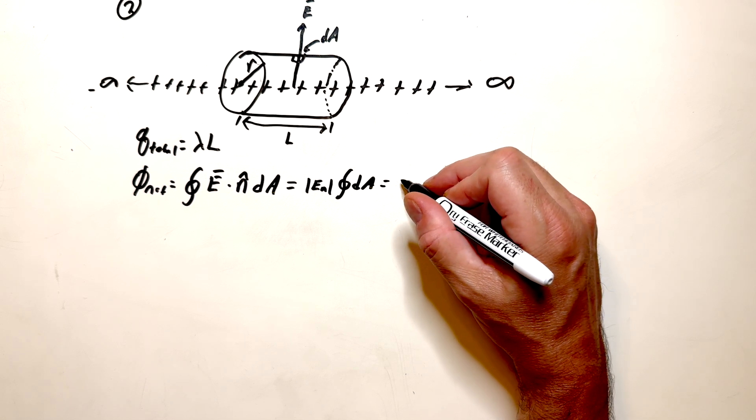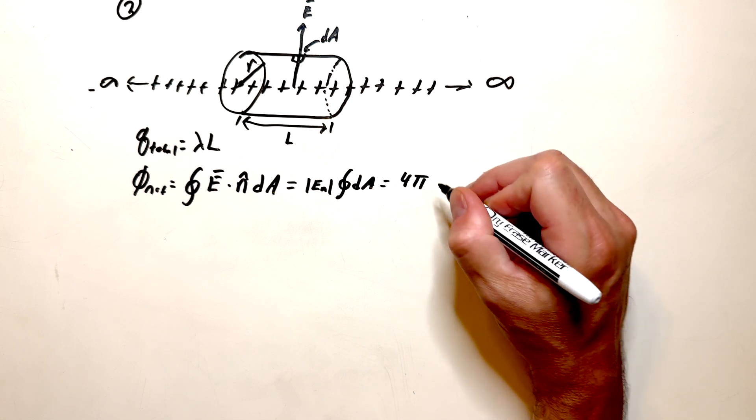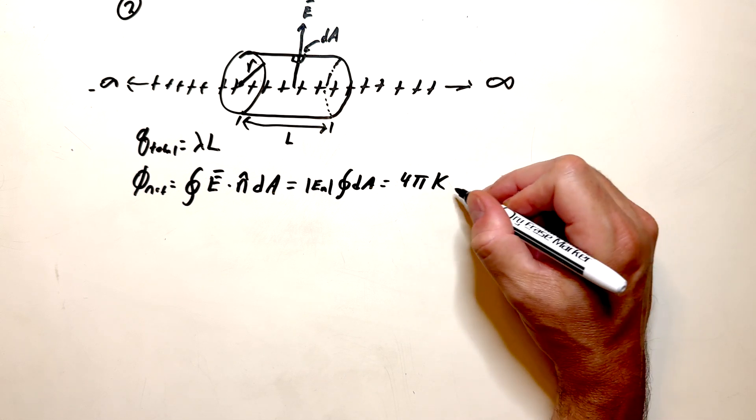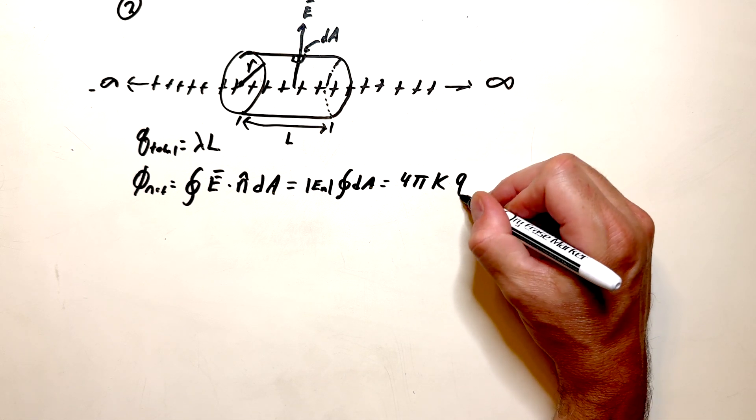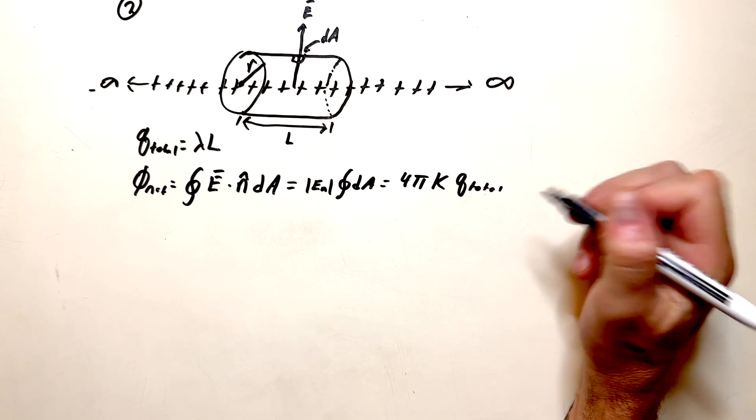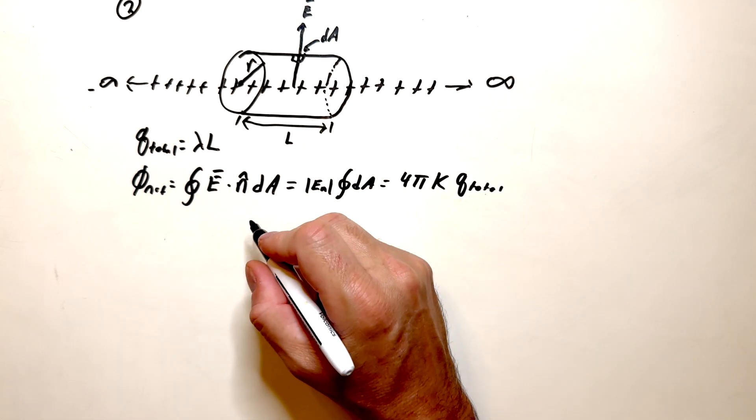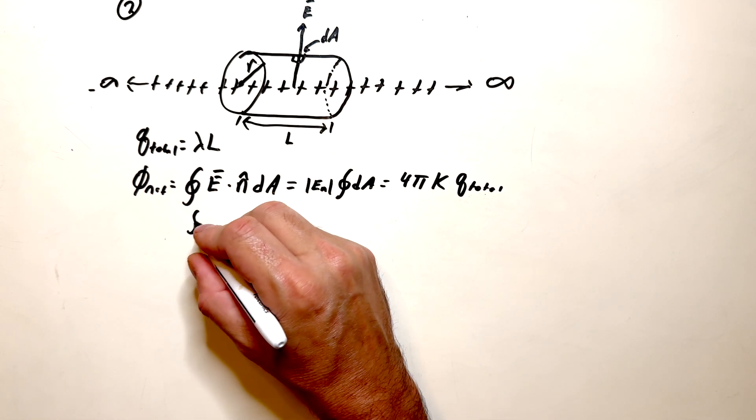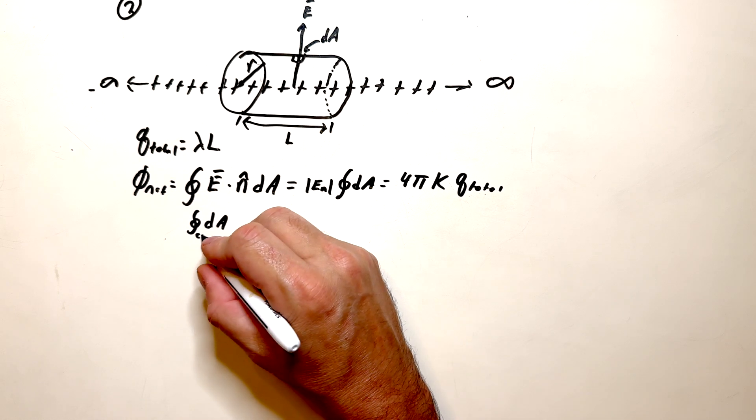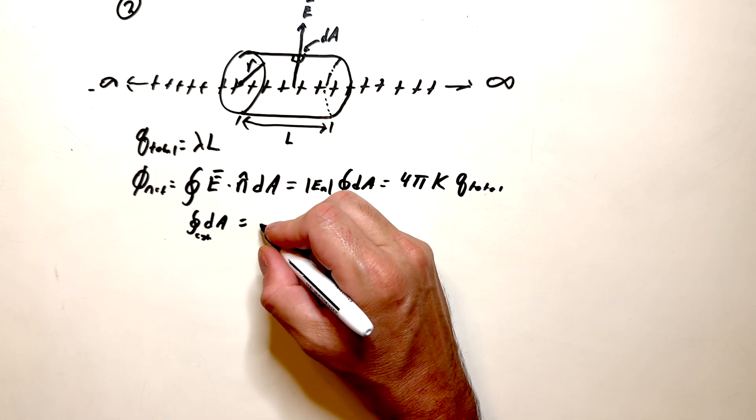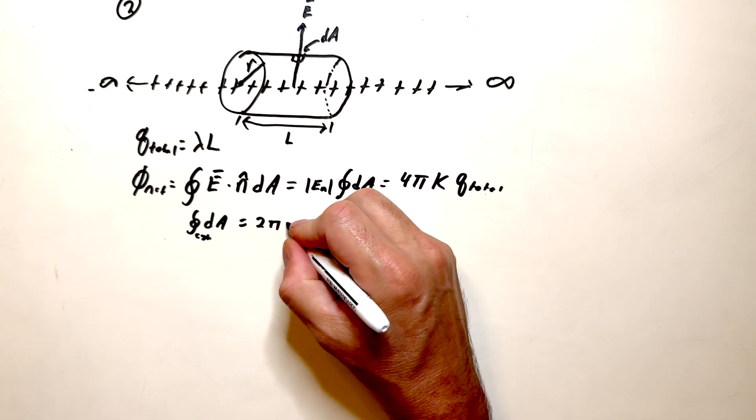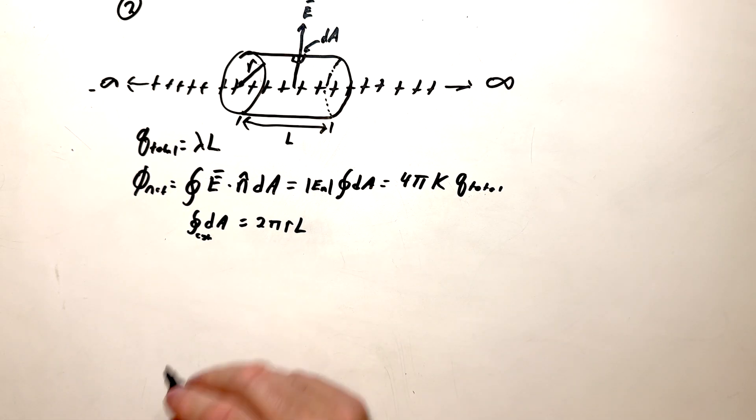And then, through Gauss's law, this will be equal to 4 pi times the Coulomb constant K times Q total. Note that the integral dA for a cylinder is equal to 2 pi r L. That was the hint that I gave.